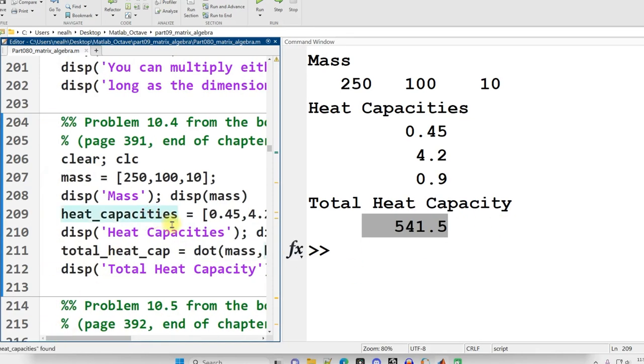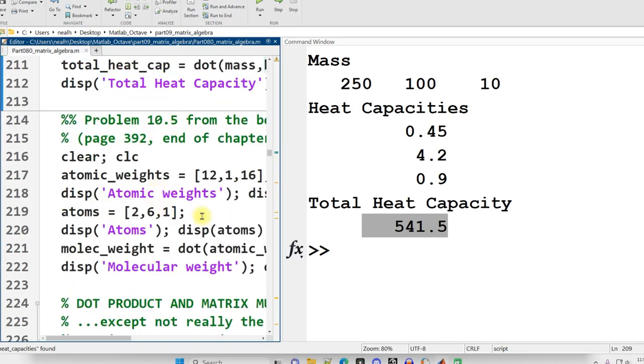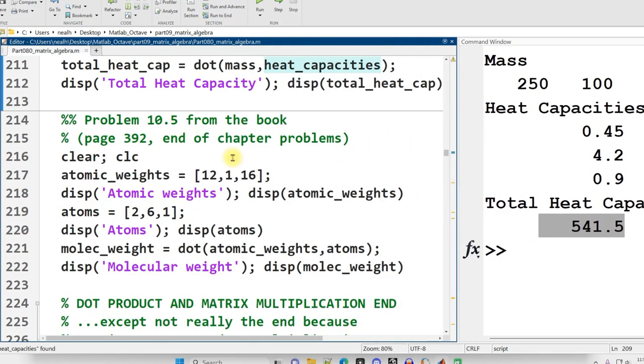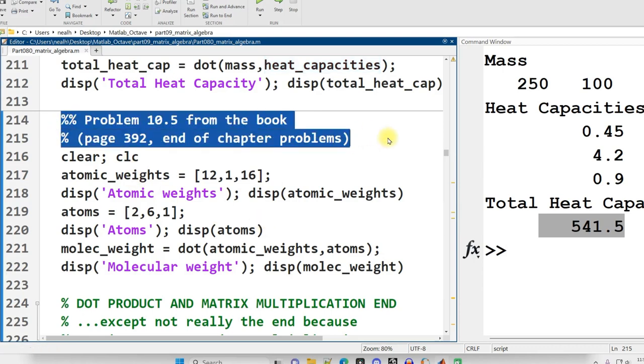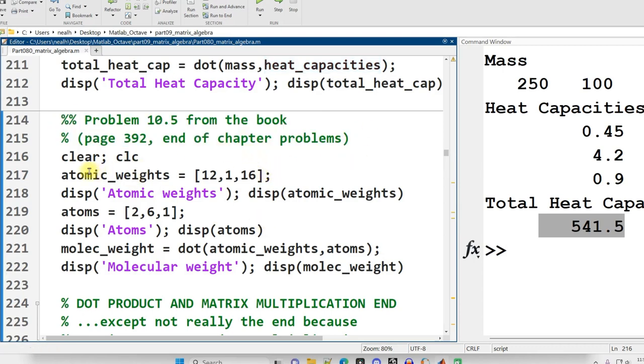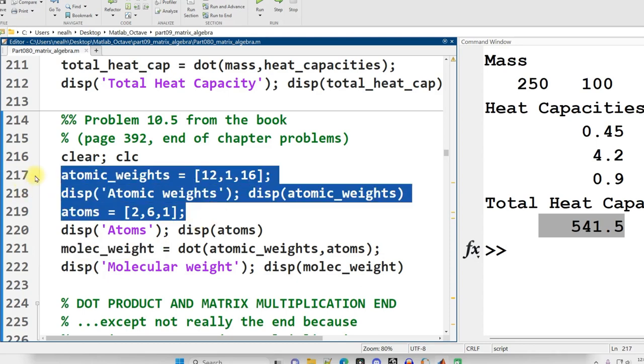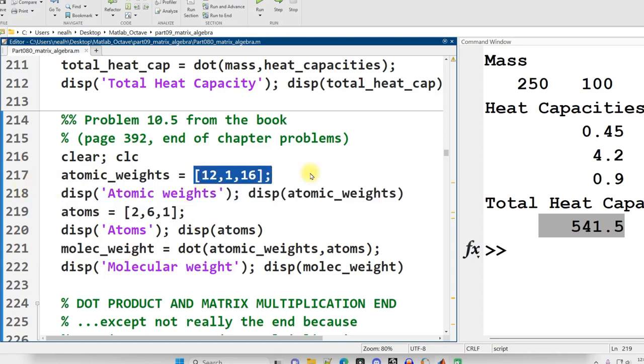And this just happens to crop up in a lot of different situations. The next example is also from the book. And we have some sort of molecule. And I don't have the book in front of me, so I don't remember what the molecule is. But we have the atomic weights of each of the atoms in the molecule. And then we have the count of each of the atoms in the molecule. And we can use this with a dot product to find the molecular weight. And this should make sense because, I mean, this sort of physics works for macro objects as well as micro objects, right?